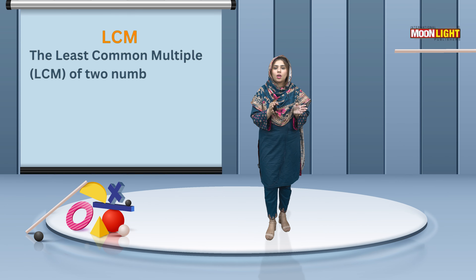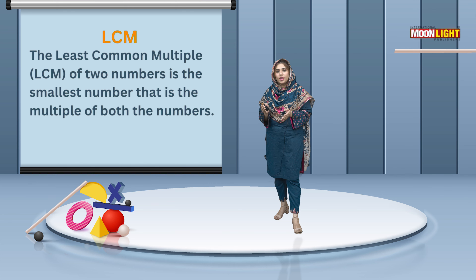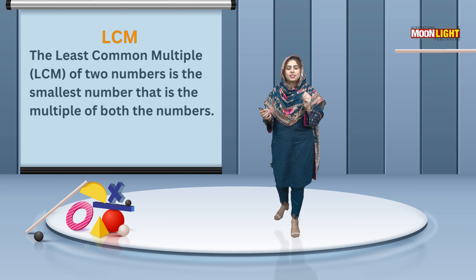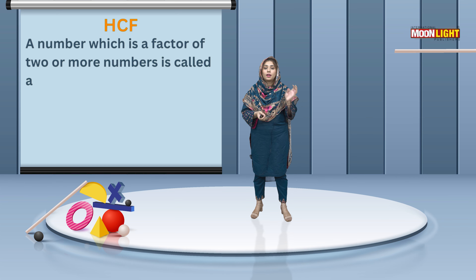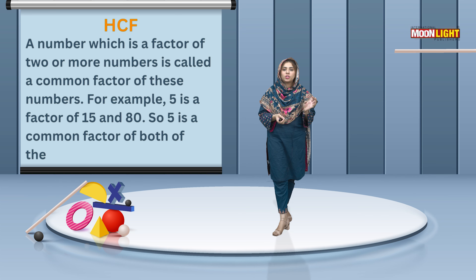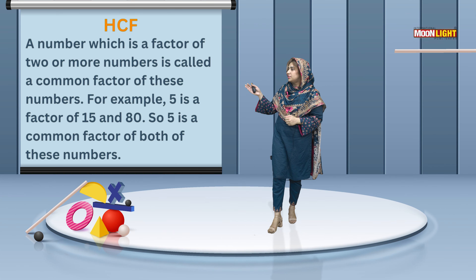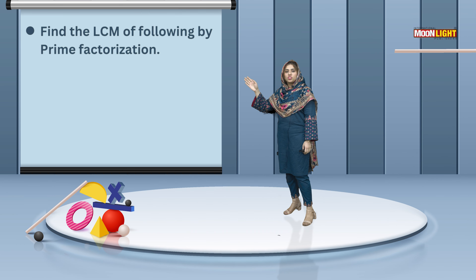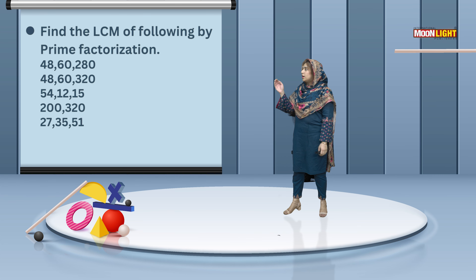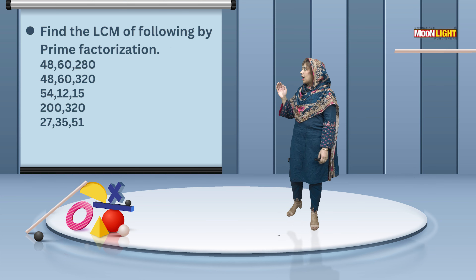If I talk about LCM, it stands for the Least Common Multiple. For example, we look at the difference between 12 and 24 to find the LCM. Similarly, HCF stands for the Highest Common Factor. You have been given five questions to work on.